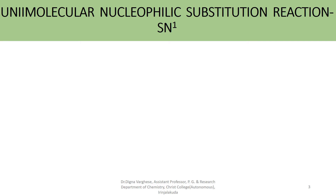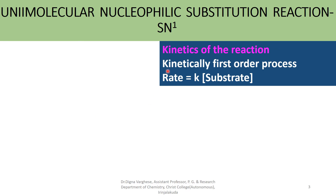In this unimolecular substitution reaction, the kinetics of the reaction is a first order process. The rate depends on the substrate only. In the case of SN2 reaction, the rate depends on the concentration of both the substrate and the nucleophile. But here, only the rate depends on the concentration of the substrate. So it is a first order process. Rate is equal to K into concentration of substrate, where K is the rate constant.